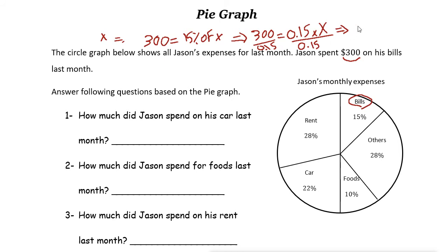If you use a calculator then it is $2,000. So the whole expenses is $2,000. So Jason spent $2,000 last month.